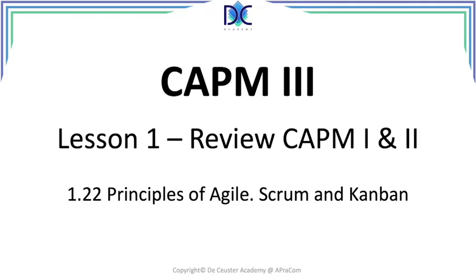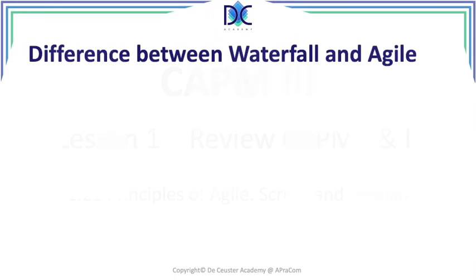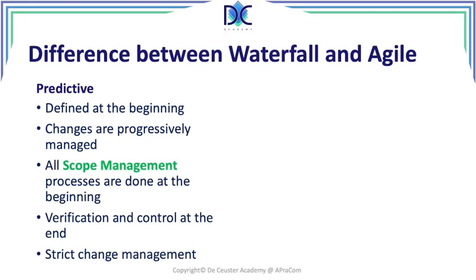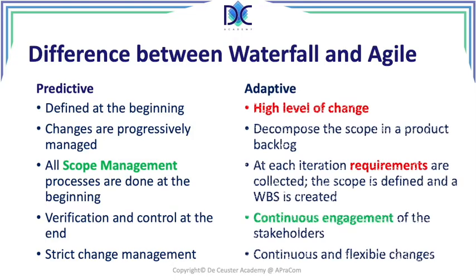Let's start and first look at the difference between waterfall and Agile. Typically in predictive environments — what we call waterfall — we define everything at the beginning. Changes are progressively managed and in some cases almost made impossible. All scope management has been done at the beginning, with verification and control at the end, and a strict change management policy.